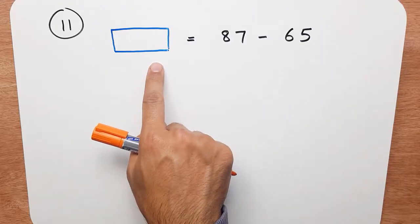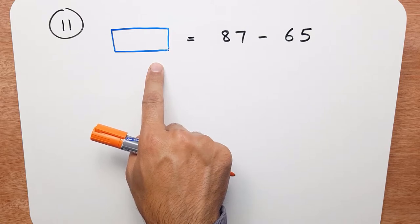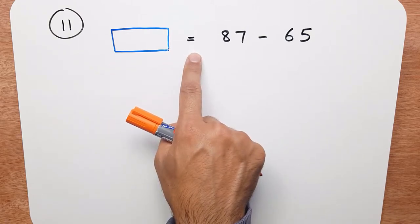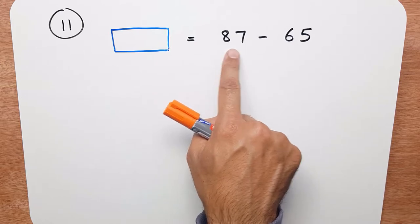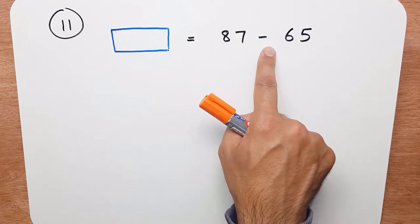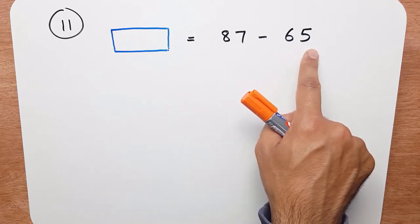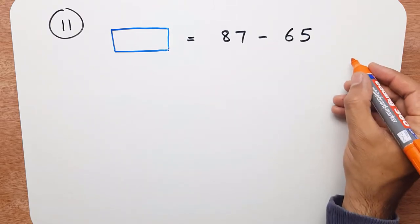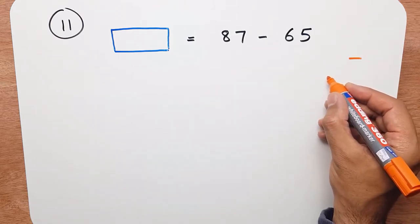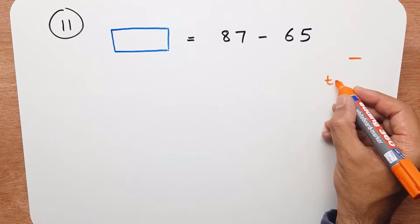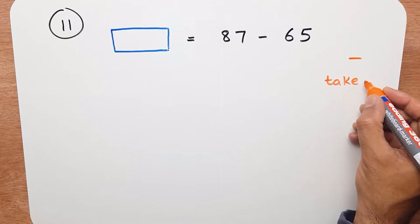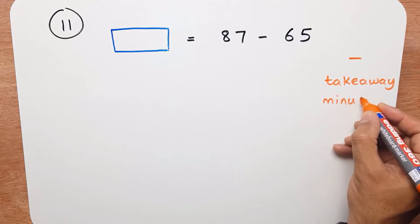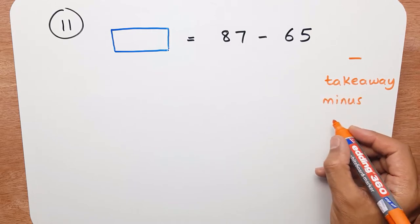In question 11, we're given something is equal to 87 take away 65. Now this symbol here — we can write 'take away', we can write 'minus', we can write 'less than'.